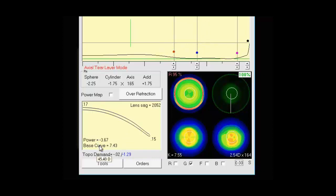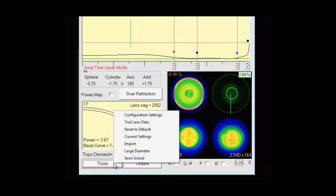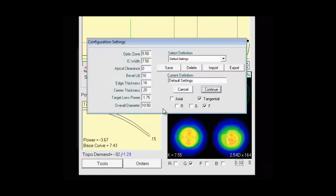The lower left we have the power and base curve. Directly underneath that we have the topo demand which is telling us the curvature of the lens in relation to the topography. Then we have our tools box. If we click on tools you'll see a lot of options here. We have configuration settings. So if we click that we have some templated designs which you can save and edit as you like. So for any specific cornea you can select the definition.